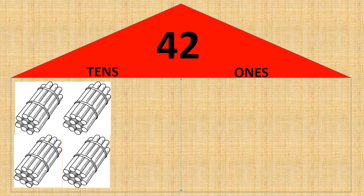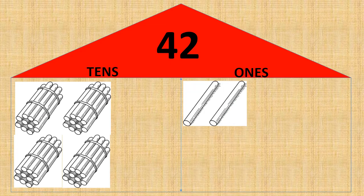And in ones place, one was missing. Now let's see this. In this place value house, the number is already given to us, and the number is forty-two. So let's find out what is missing. In the tens place, we can see one, two, three, four — four tens. But in the ones place, two ones are missing.